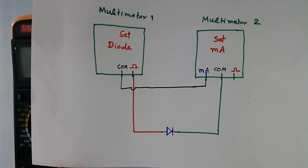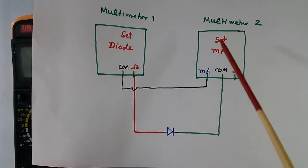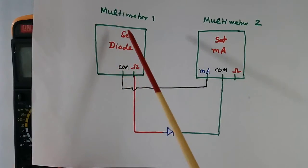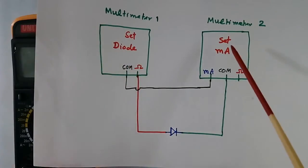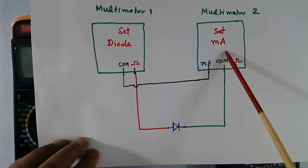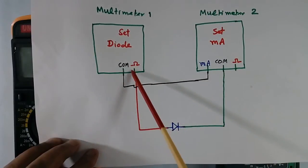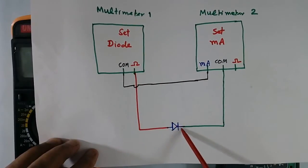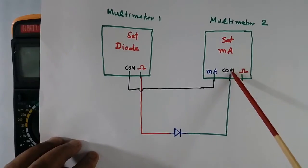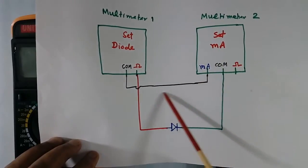This is setup. I have 2 multimeters. One is set for diode. Other for mA. This is connected in series of diode. This positive is connected to anode. The cathode goes to common. And this circuit completes.